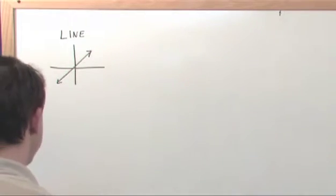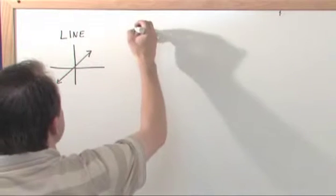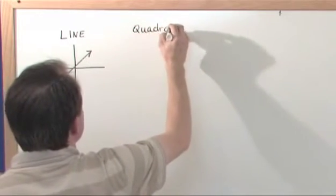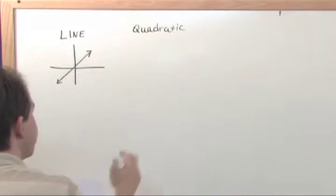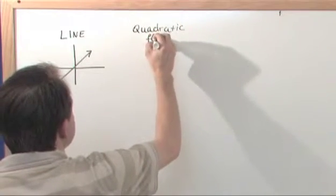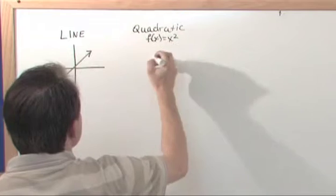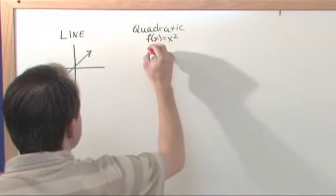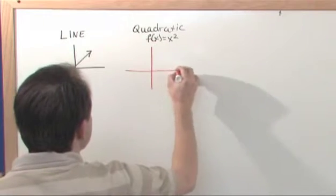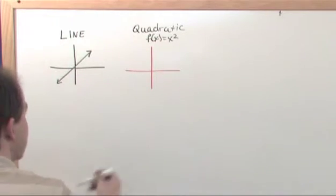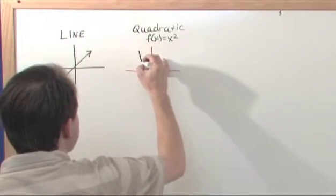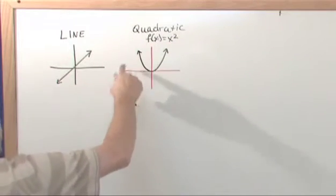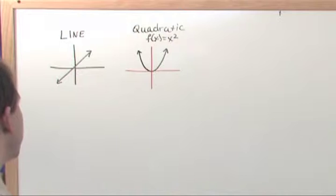The graph of a basic quadratic looks like this, and when I say a basic quadratic, something like f(x) = x². Here's your axis here — that is going to look like the basic one will look something like this. It goes on and on forever up like this, and it bottoms out. That's a basic quadratic.